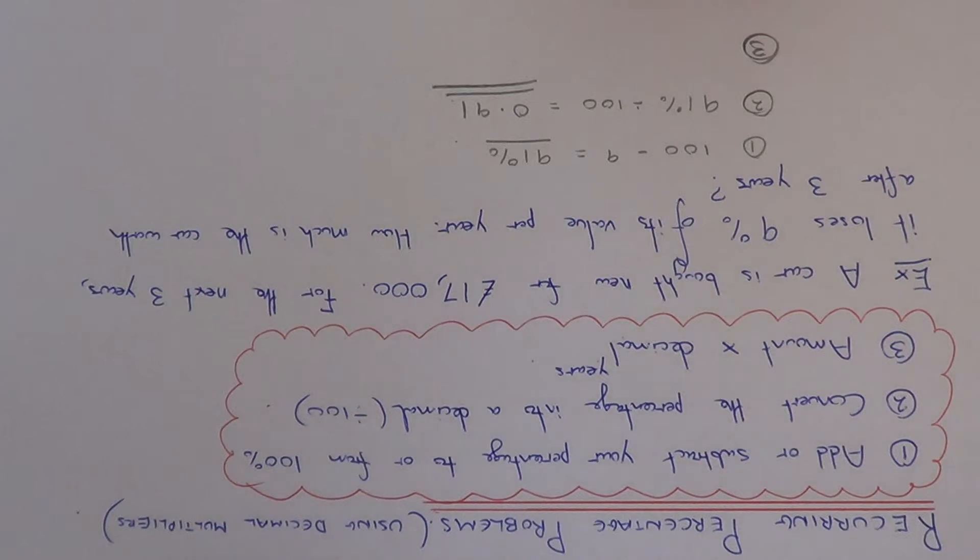Our third and final step is to get the amount, which is £17,000, and multiply it by the decimal multiplier, which is 0.91. However, since it's over a 3-year period, we need to put the 3 on top of the 0.91, so we're doing 0.91 cubed.